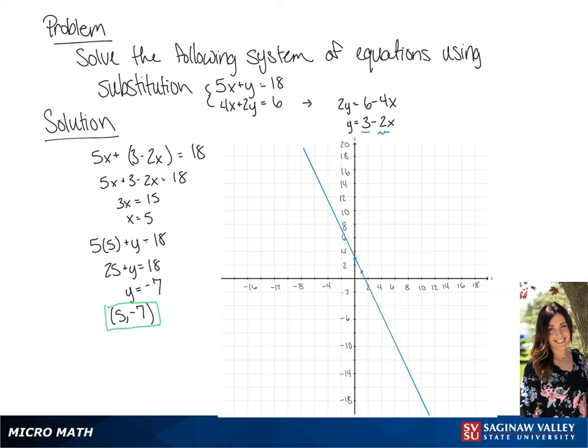And now for the first equation, we are going to solve for the x-intercept, so we're going to substitute 0 for y, and we get 18 over 5. Now we're going to solve for the y-intercept, and we get y equals 18. We can plot both of these and draw our line.